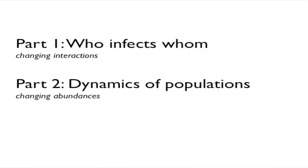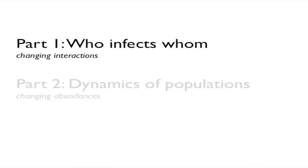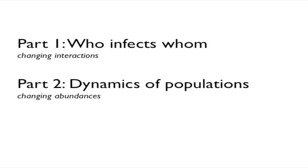Today I'll be talking about two ways there is an interplay between ecology and evolutionary dynamics with respect to phage in particular. First: who infects whom? Building upon this early work by Luria and Delbrück, how can we think about the network of infections within a complex community? And the other part: what are the dynamics — what are the consequences of having something other than just a single virus and a single host, and how do those multi-type dynamics affect ecology?